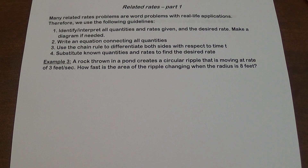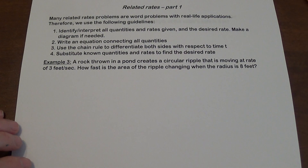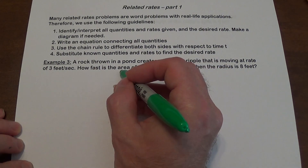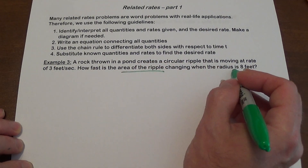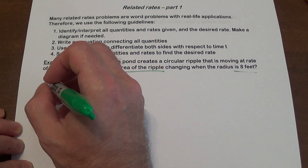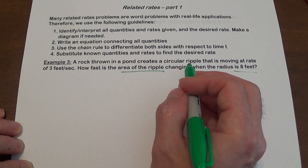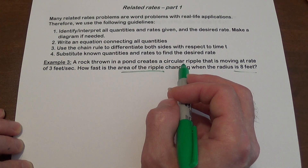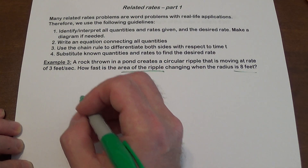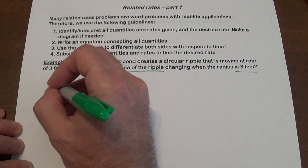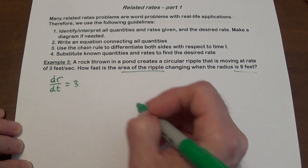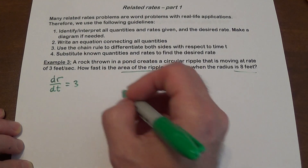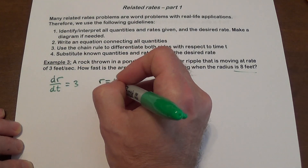Here's our first word problem. A rock is thrown in a pond and creates a circular ripple moving at the rate of 3 feet per second. How fast is the area of the ripple changing when the radius is 8 feet? The rate affects the radius, so dr/dt is 3. We also know that the radius is 8 feet.